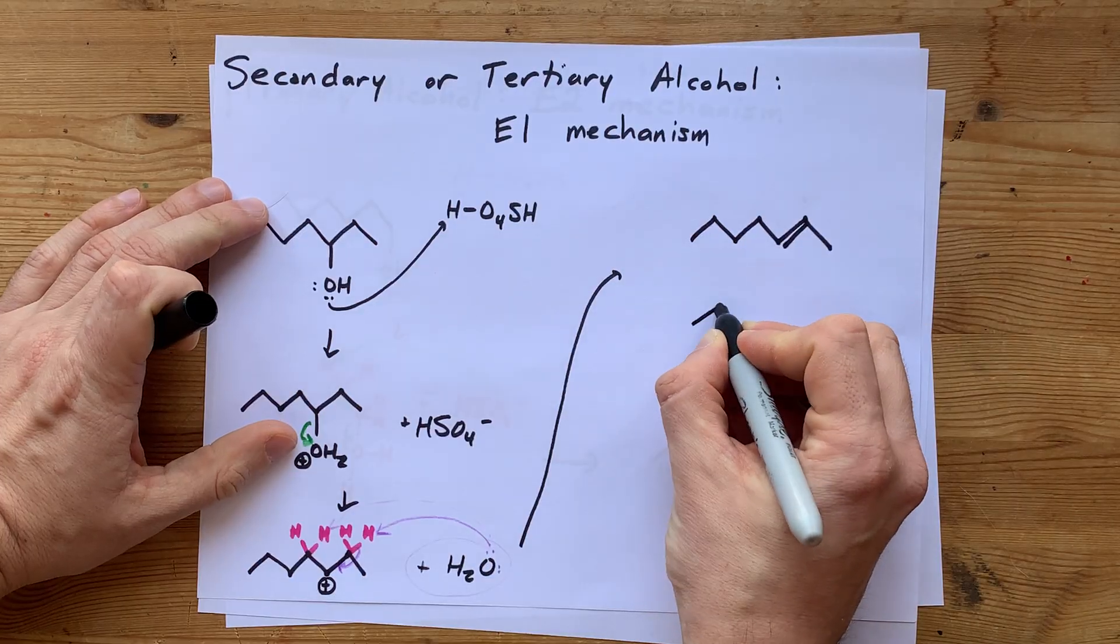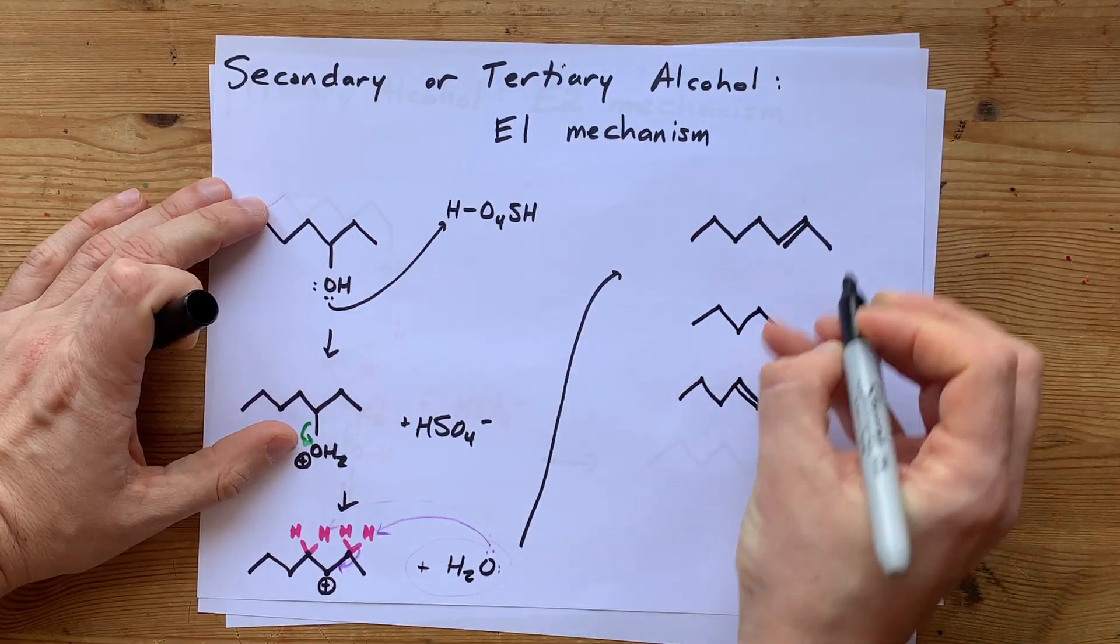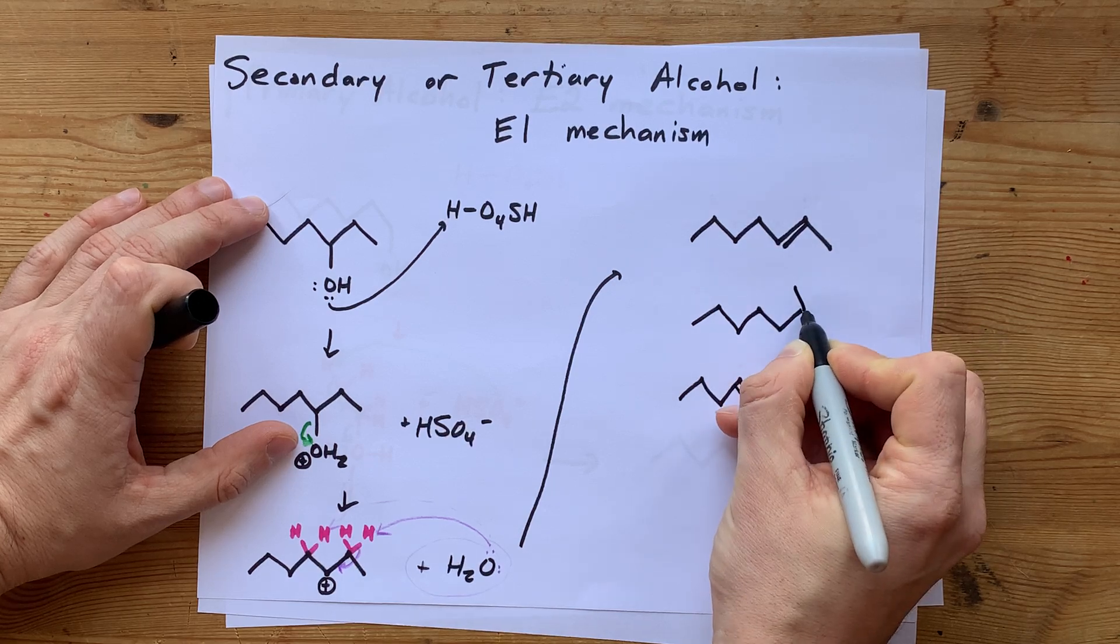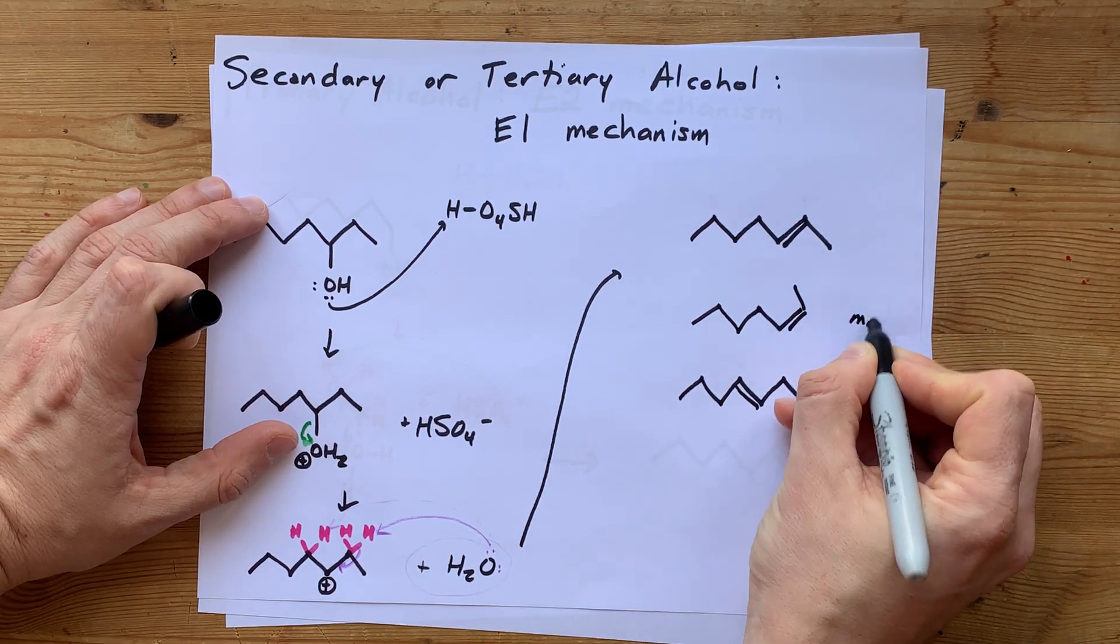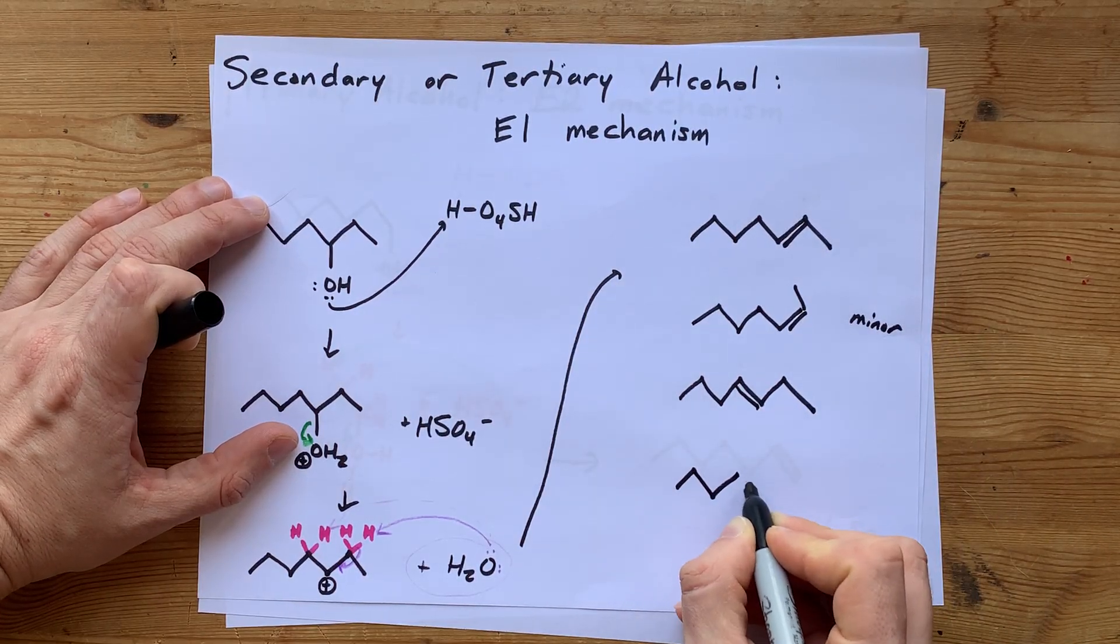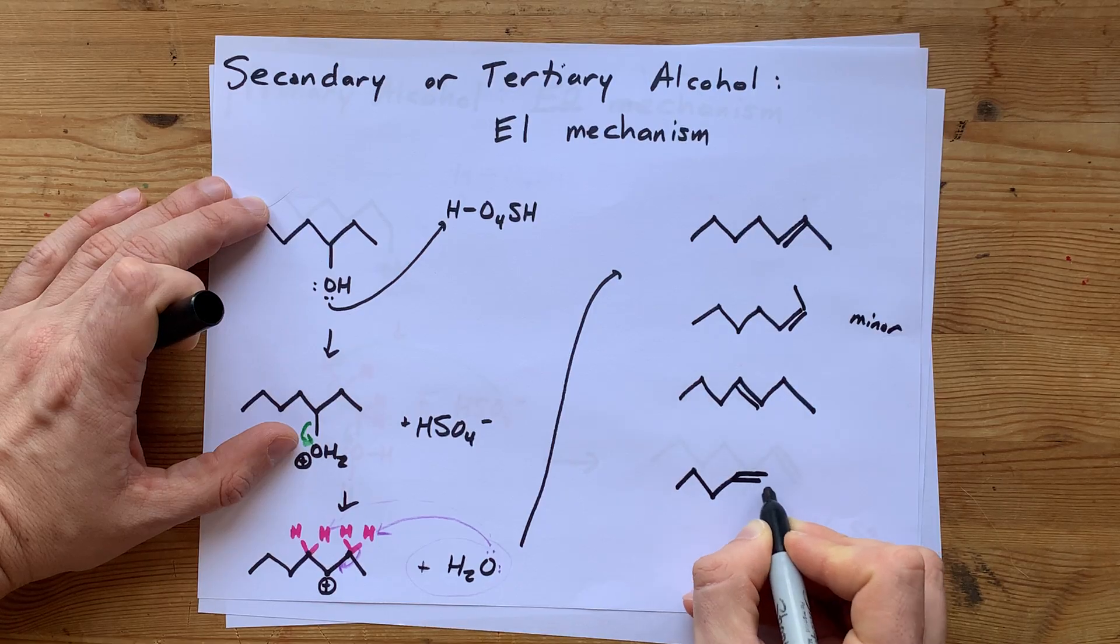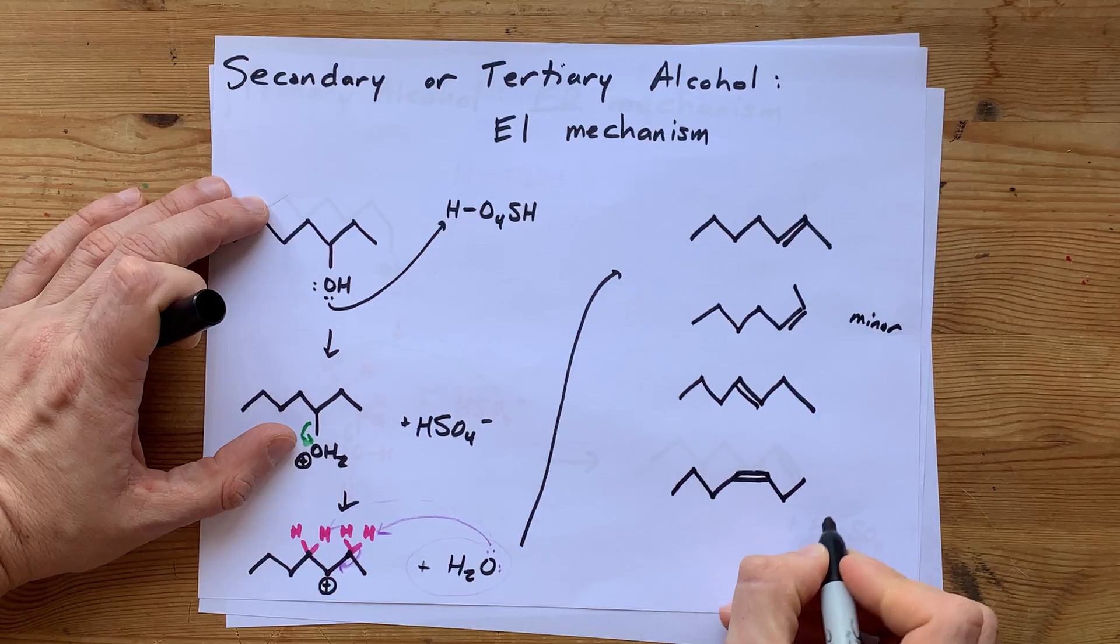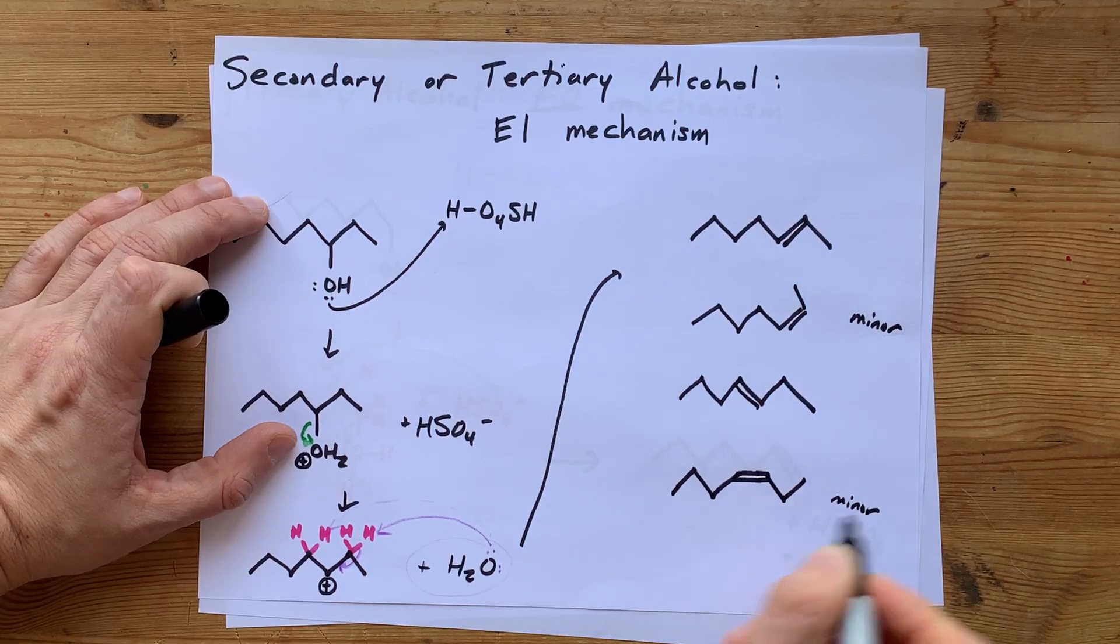And realistically, I could also imagine a cis form also being there, but as a minor product. Now I got to draw this one just so. I'll draw the double bond there. One, two, something like that. That's the same number of carbons. And this is also a minor product.